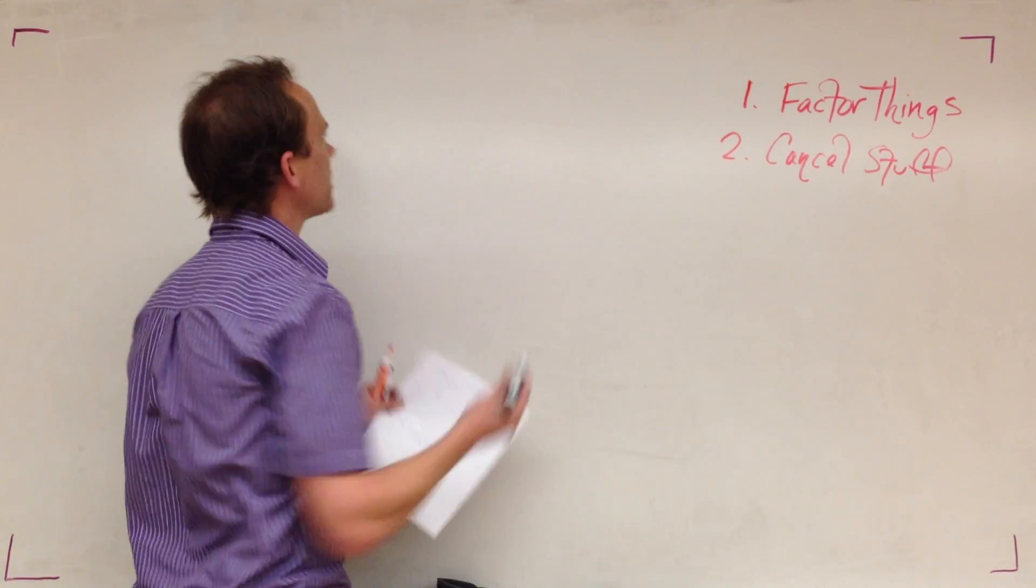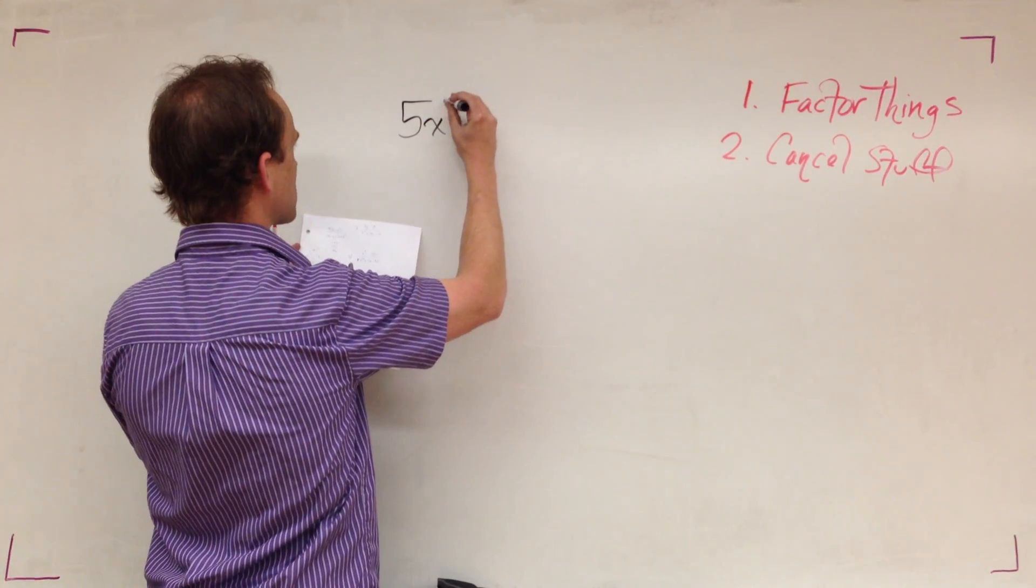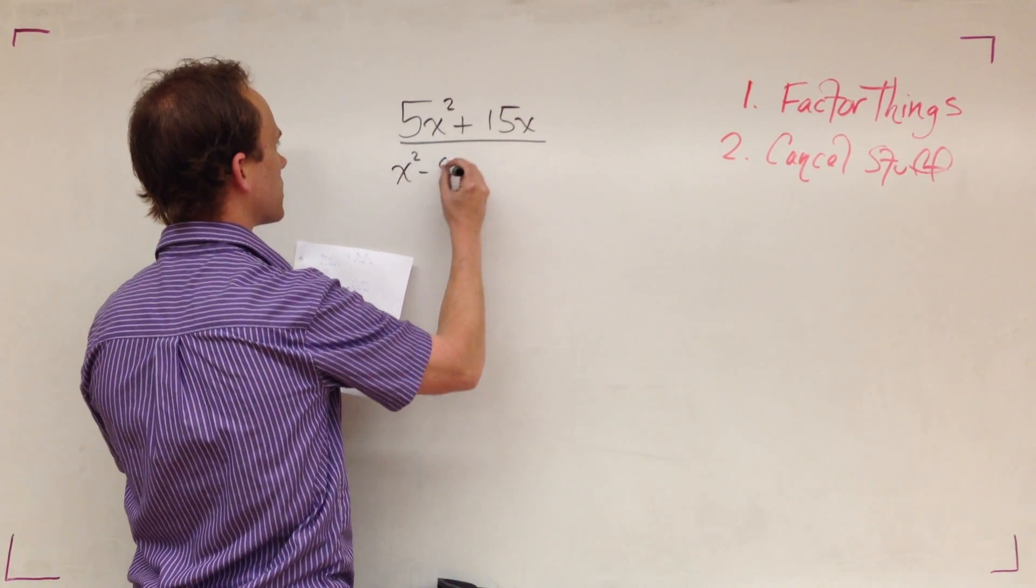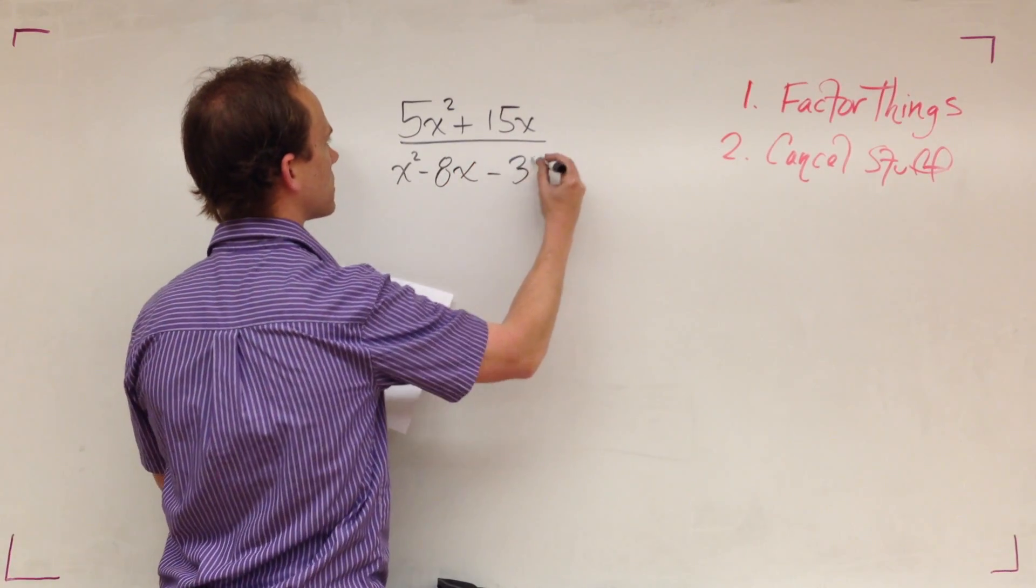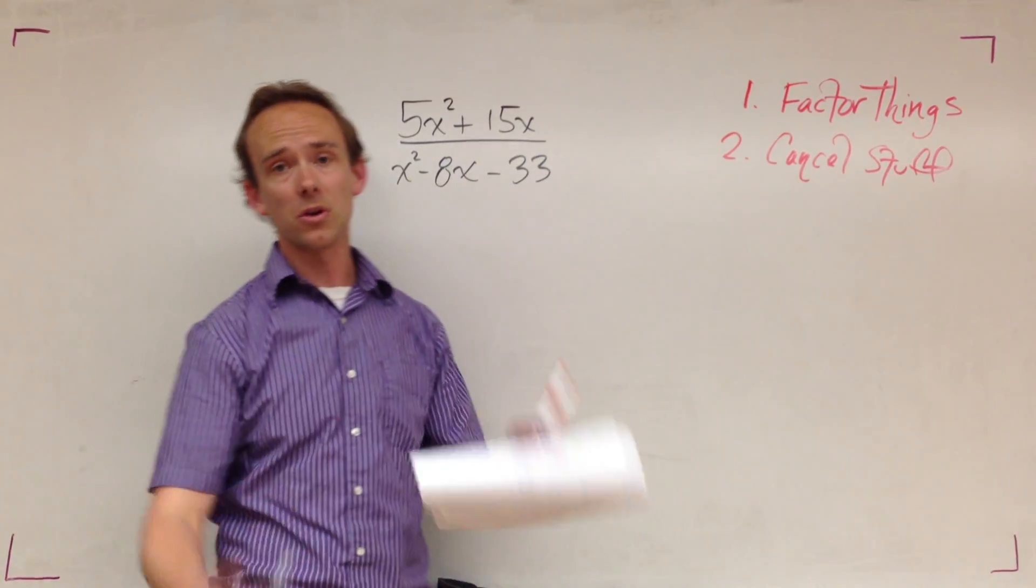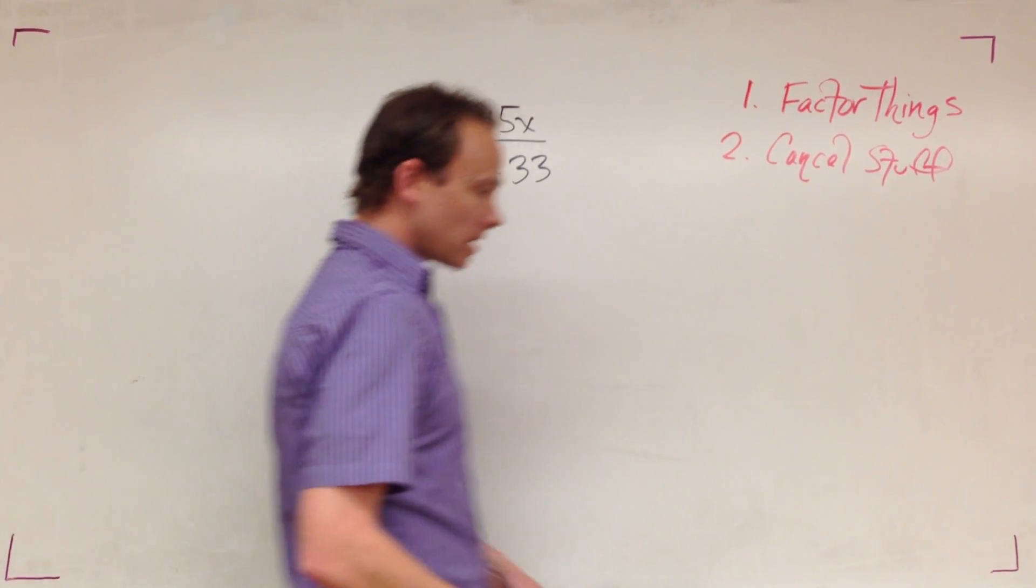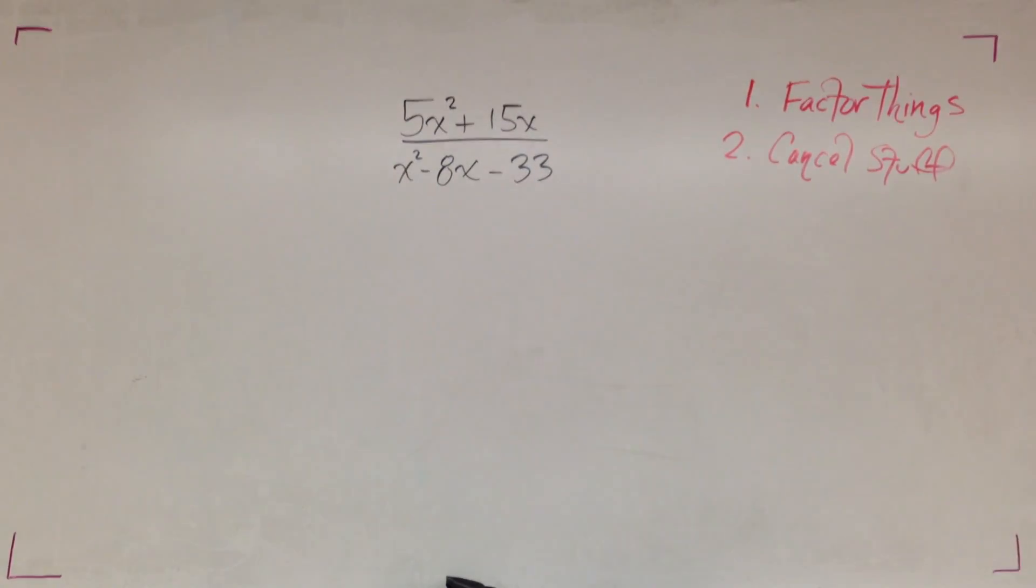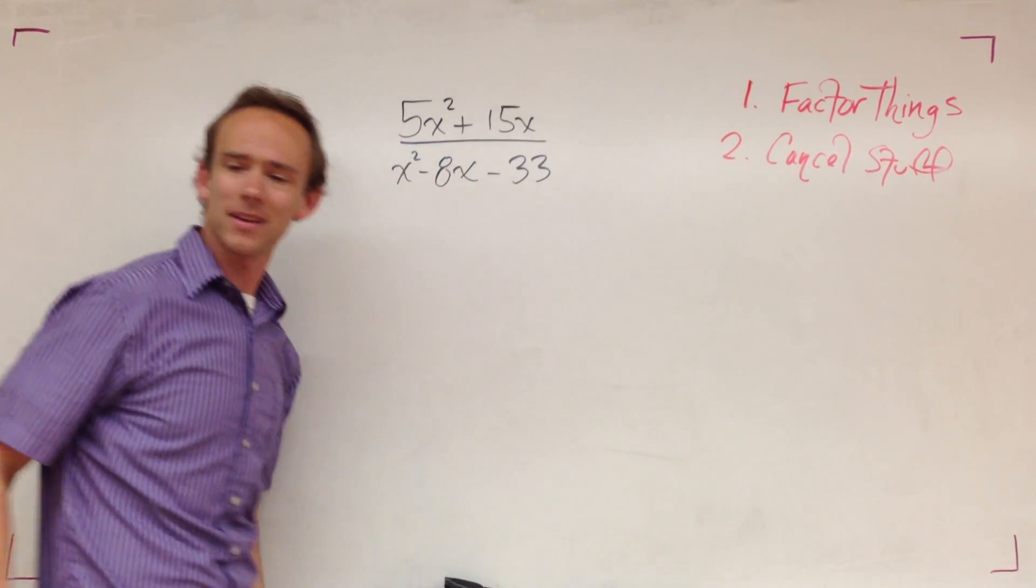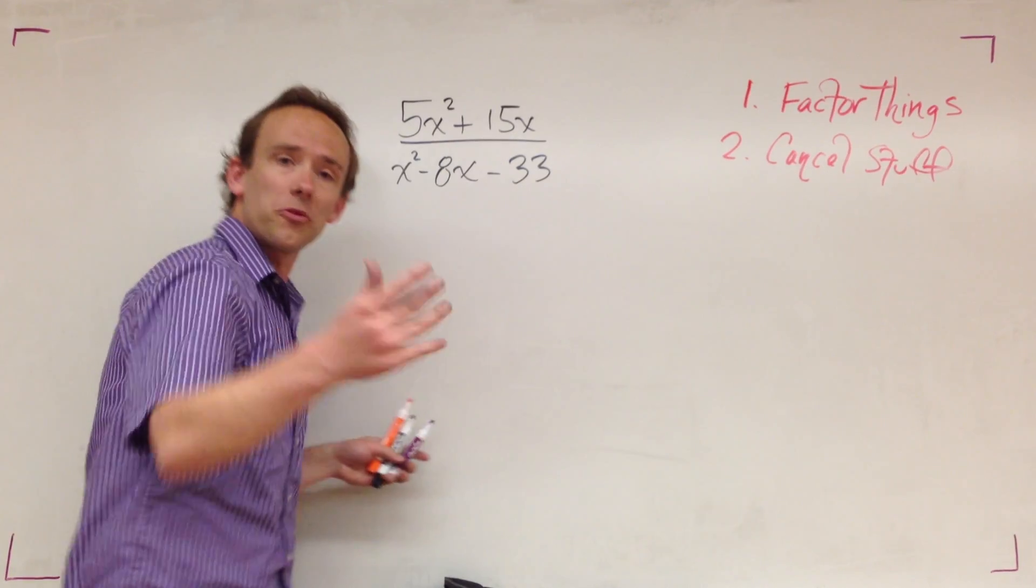Here's the money, here we go. Let's start right now with 5x squared plus 15x, all of that over x squared minus 8x minus 33. Pause the video, try your best, and then play the video and I'm going to go over the solutions. Hopefully you just tried your best.